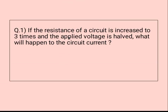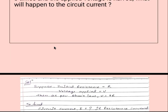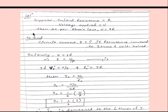Question number one: if the resistance of a circuit is increased to three times and the applied voltage is halved, what will happen to the circuit current? First of all, we will suppose that the initial resistance is equal to R and voltage applied is equal to V. Then as per Ohm's Law, V is equal to IR. What we have to find is the circuit current.